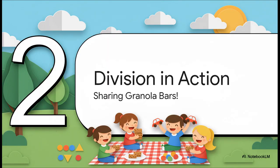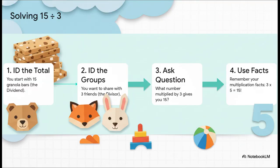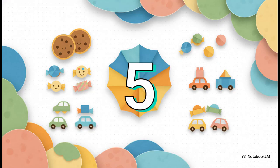Theory is great, but let's put this superpower into action with a classic snack sharing problem. We've got 15 granola bars and three friends — we gotta be fair. How many granola bars does each friend get? Let's figure out 15 divided by 3. We know our dividend is 15 and our divisor is 3. So we ask the magic question that links back to multiplication: what number times 3 gets me 15? If you know your multiplication facts, you're already smiling — it's 5. Each friend gets 5 granola bars. 15 divided by 3 equals 5.